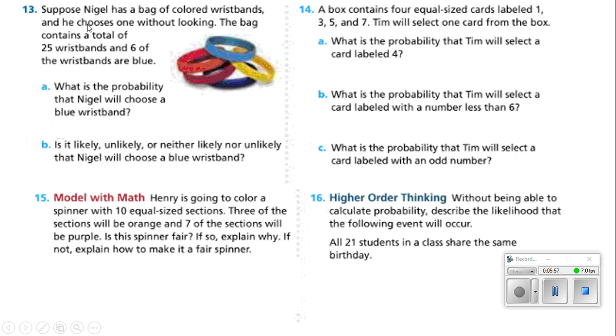Number 13 says, suppose Nigel has a bag of colored wristbands and he chooses one without looking. The bag contains a total of 25 wristbands and 6 of the wristbands are blue. What is the probability Nigel will choose a blue wristband? Well, that's 6 out of 25. It is unlikely or neither likely nor unlikely that Nigel will choose a blue wristband. Well, 6 out of 25 is unlikely. That's not even half of 25, right? So that means it's more likely you're going to get a color that is not going to be blue.